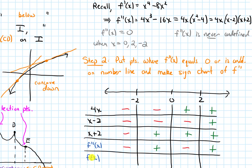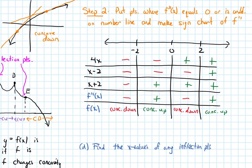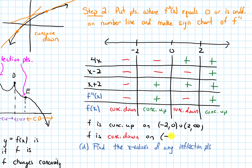Based on the theorem, when the second derivative is positive the original function is concave up, and when it's negative the function is concave down. So f is concave up on the interval from negative 2 to 0, union the interval from 2 to infinity. And f is concave down on the interval from negative infinity to negative 2, union the interval from 0 to 2.